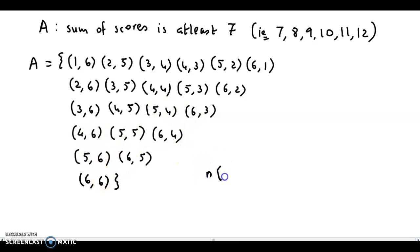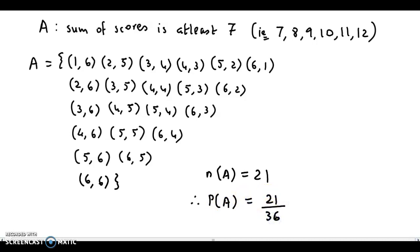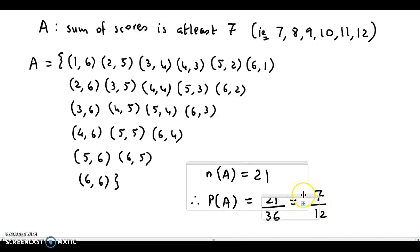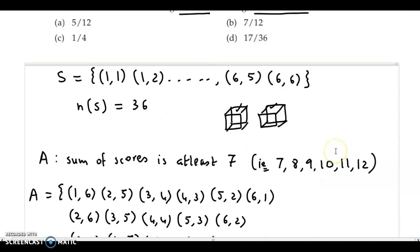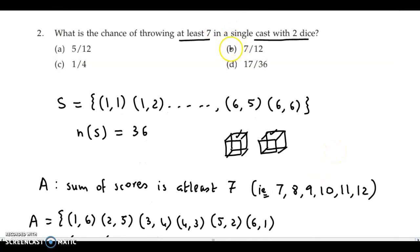So the outcomes in favor are 21. Therefore, probability of event A will be n of A divided by n of S, that is 21 upon 36. We can reduce this by 3 — 3 sevens and 3 twelves — so our answer comes out to 7 by 12. The answer is option B, 7 by 12.